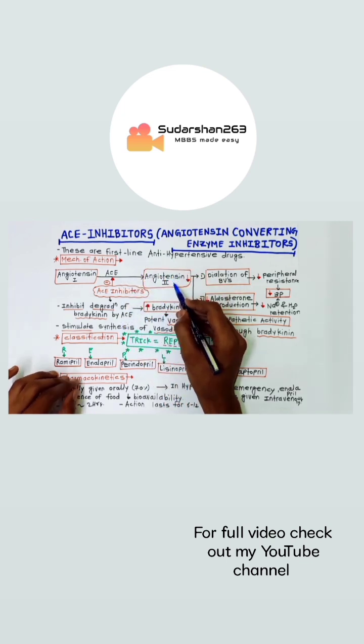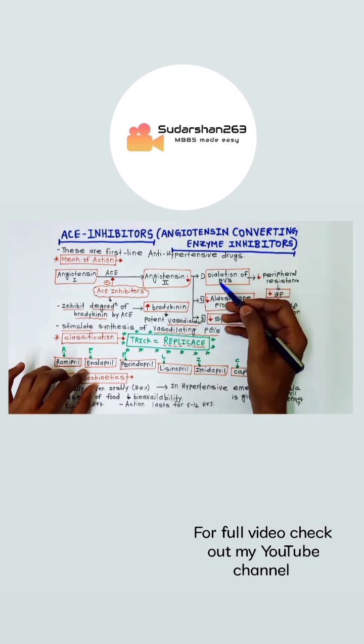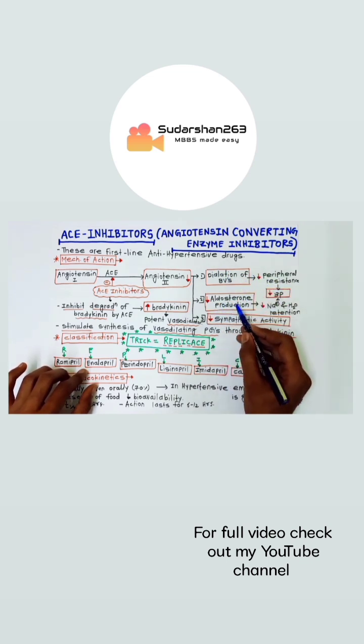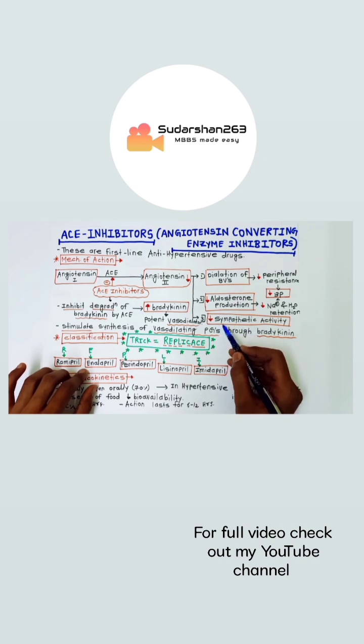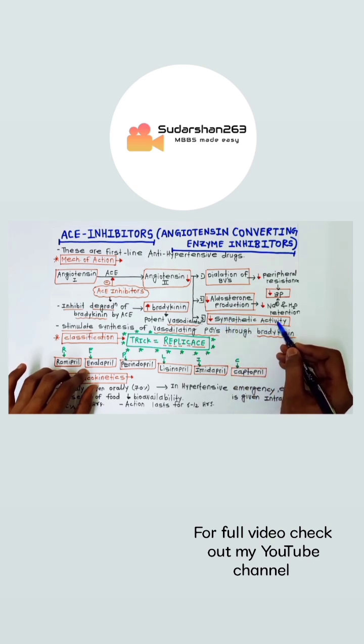Angiotensin 2 has various effects on the body like constriction of blood vessels, increases aldosterone production and increases sympathetic activity which leads to increase in blood pressure.